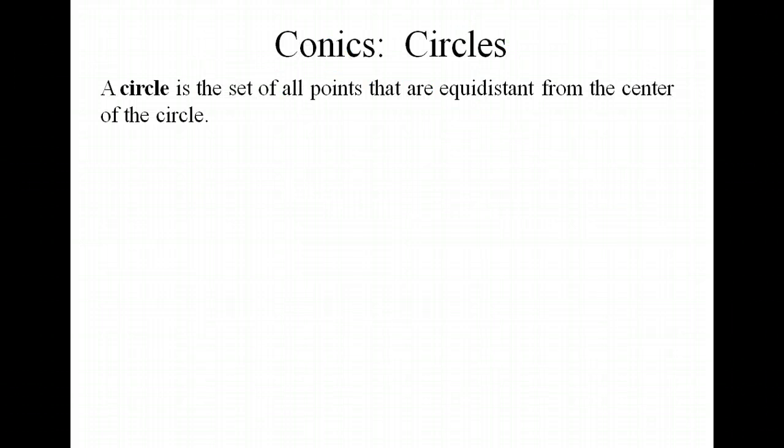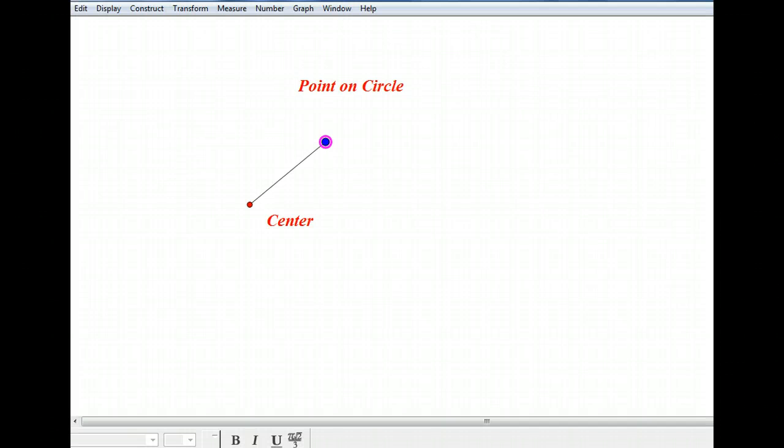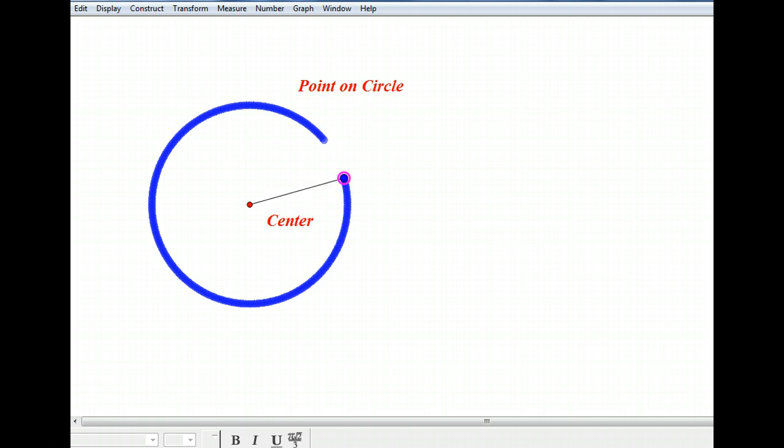A circle is a set of all points that are equidistant from the center of the circle. Here we have a center point marked in red, and a blue point that is at the end of the radius length. The black line is the radius length. We're going to take the radius length and turn it around, and as we do so, the point at the end is going to form the circle. So our circle has many dots on the edge of the circle that are all the same distance away from the center of the circle.